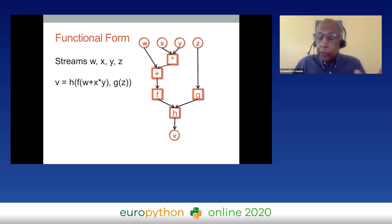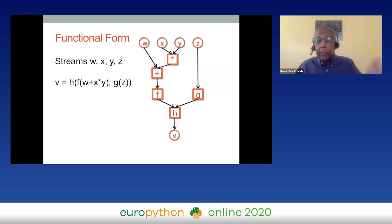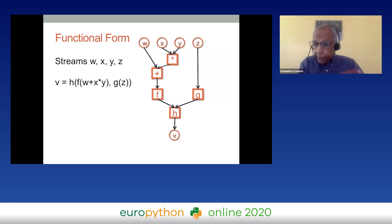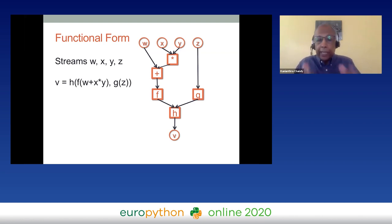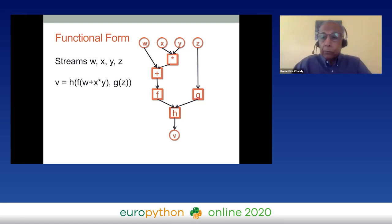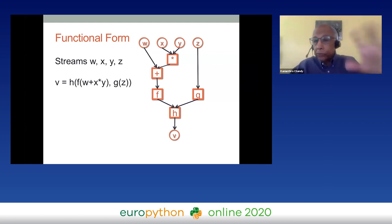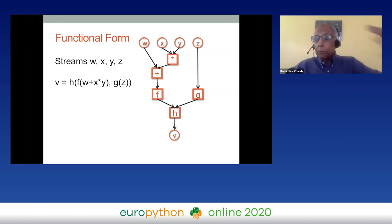You can also use streams in a functional form. Here w, x, y, z, d are all streams. You can create d using a functional form — exactly as written — where each function f, g, h is a function from streams to streams. Once you write this equation, you now have persistent agents and persistent inputs and outputs that keep living as long as the inputs are alive.